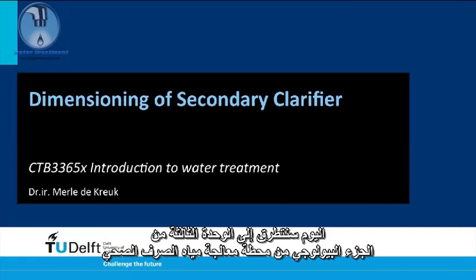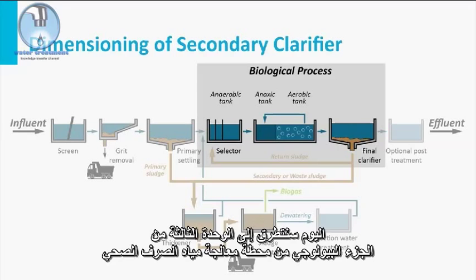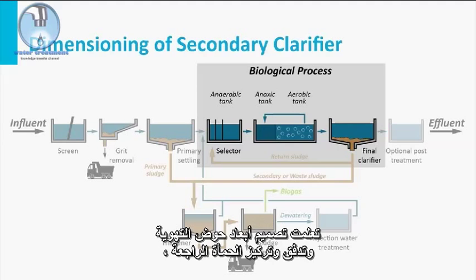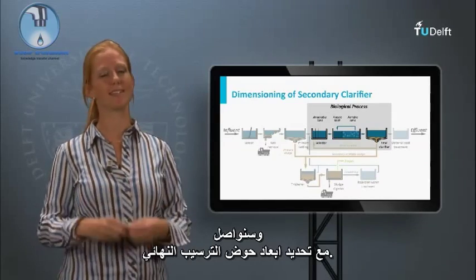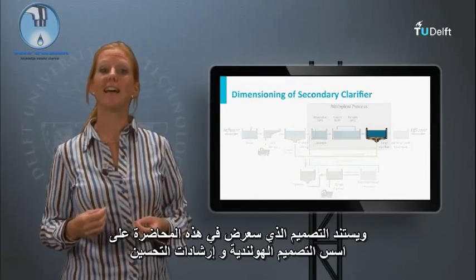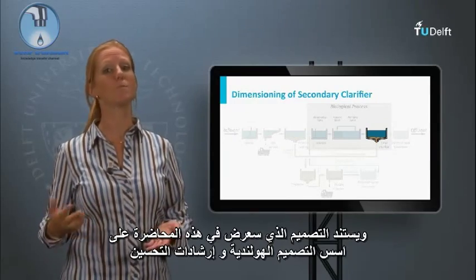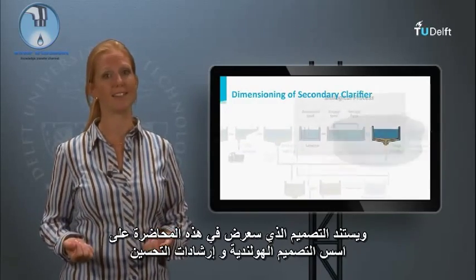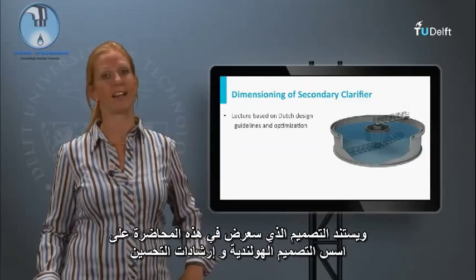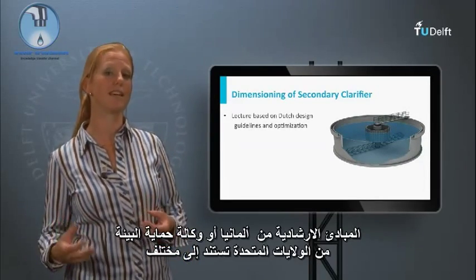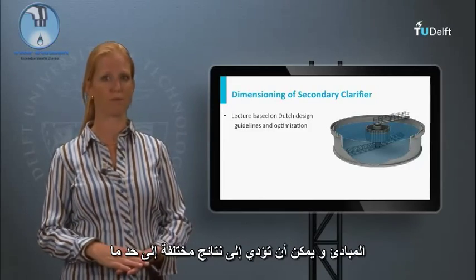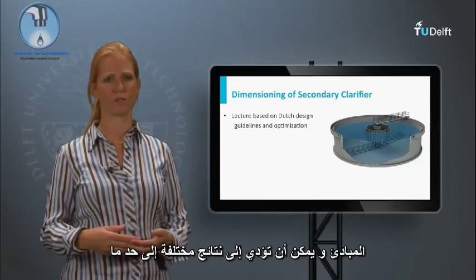Today we will tackle the third unit of the biological part of the sewage treatment plant. You learned the dimensioning of an aeration tank, the flow and concentration of the return sludge, and we will continue with sizing the final clarifier. The design given in this lecture is based on the Dutch design guidelines and optimization guidelines. Guidelines from Germany or APA guidelines from the United States are based on different principles and might lead to somewhat different results.